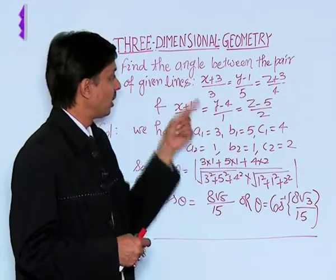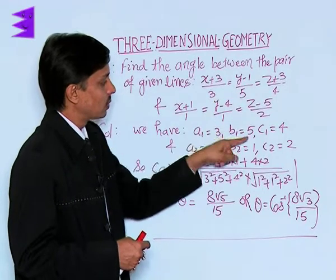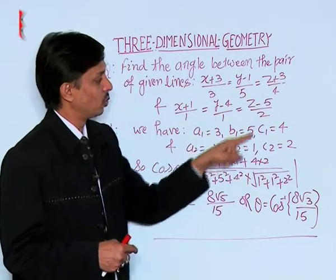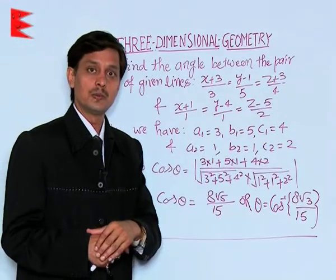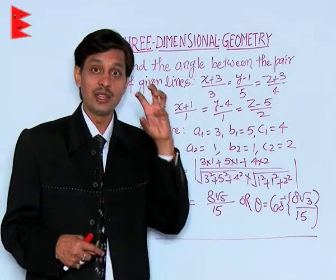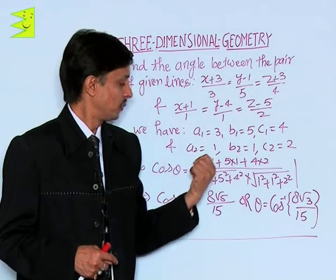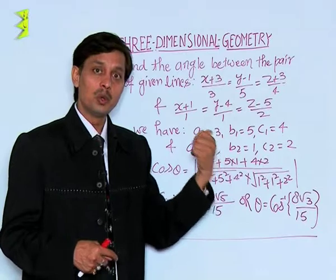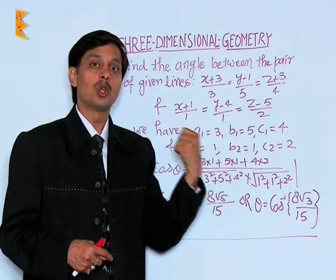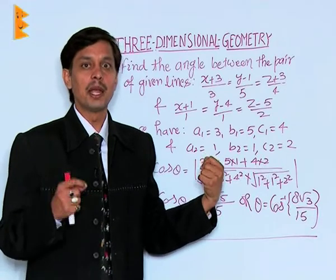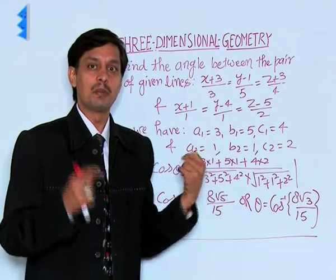Now, we have a1 is 3, b1 is 5, c1 is 4, a2 is 1, b2 is 1, and c2 is 2. The result for finding the angle between two lines is cos theta equals a1 into a2 plus b1 into b2 plus c1 into c2, upon root of a1 square plus b1 square plus c1 square, multiplied by root of a2 square plus b2 square plus c2 square.